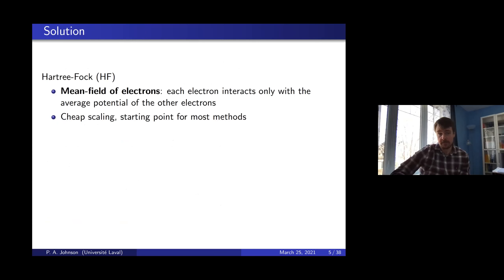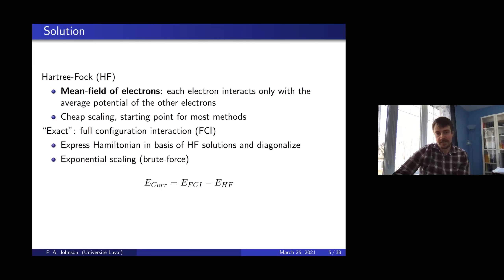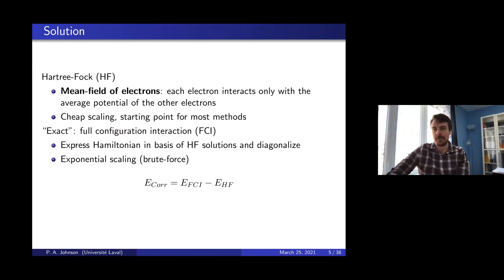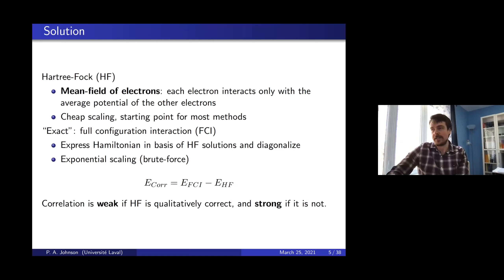The practical method in chemistry is usually to treat electrons as being independent — a reasonable first approximation for a lot of chemistry. It scales very well and is a starting point for all corrections. The exact answer is to brute-force diagonalize the solution: take a complete basis, write the Hamiltonian in that basis as a gigantic matrix, and diagonalize it. The difference between the independent-electron picture — Hartree-Fock — and the exact answer is the correlation. If Hartree-Fock is qualitatively correct, we say the correlation is weak; if it is not, we say it is strong.